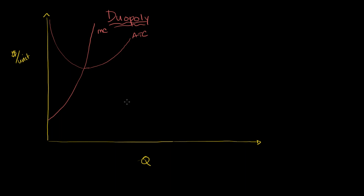Now let's think about what it would look like for the market. Pick an arbitrary marginal cost. For one firm, they'll be at a certain quantity at that marginal cost. But if you have two firms just like that, they could have twice as much quantity at that same marginal cost. So what you're essentially doing is adding this curve to itself in the horizontal direction, giving you a marginal cost curve for both firms together that is twice as fat.